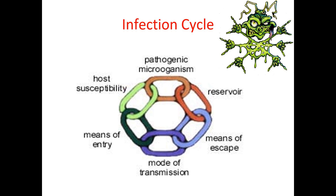The sixth link is host susceptibility, which depends on the health and immune system of the host. A healthy person may resist infection, while someone who is immunocompromised may be more susceptible. This goes back to the elderly, those already sick, or newborn children. Phlebotomists play a key role in breaking this cycle by practicing proper hand hygiene, using PPE, and following infection control protocols.